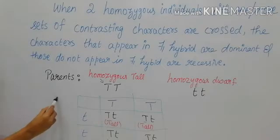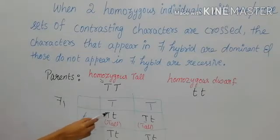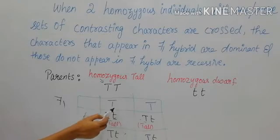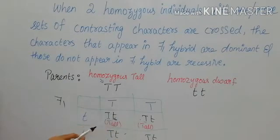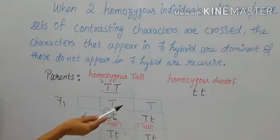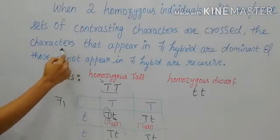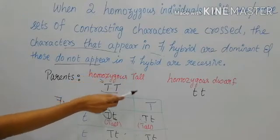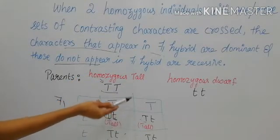When these two are allowed to cross, we will get F1 generation with four offspring. These offspring carry capital T and small t, that is heterozygous. Since the presence of capital T represents the dominant character, all offspring show the tall character. They do not show the dwarf character, which is the recessive character. That is the Law of Dominance.